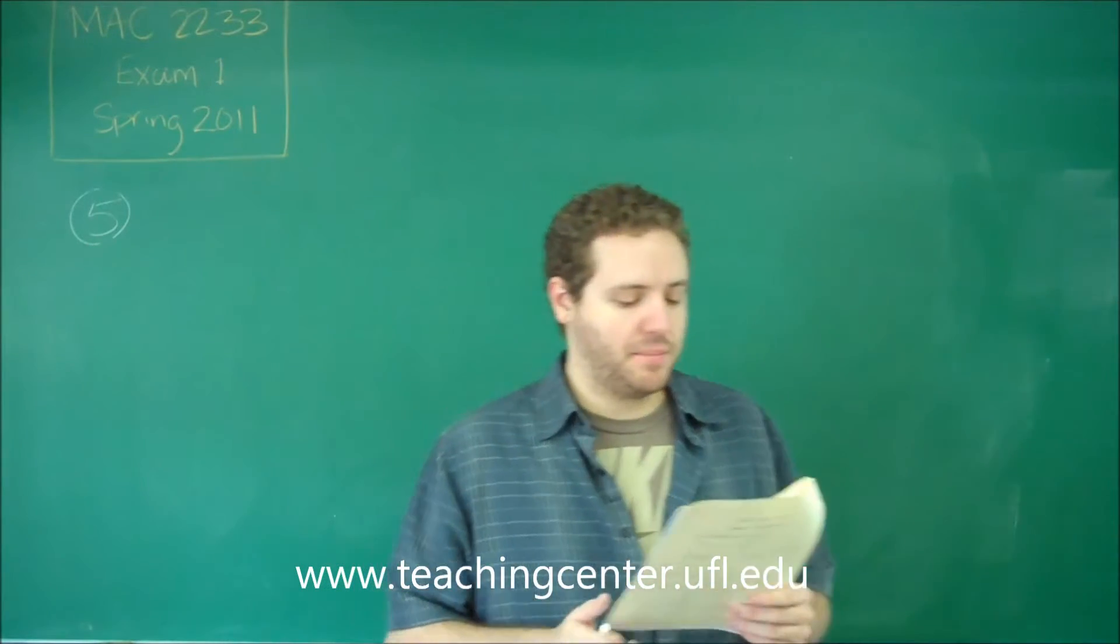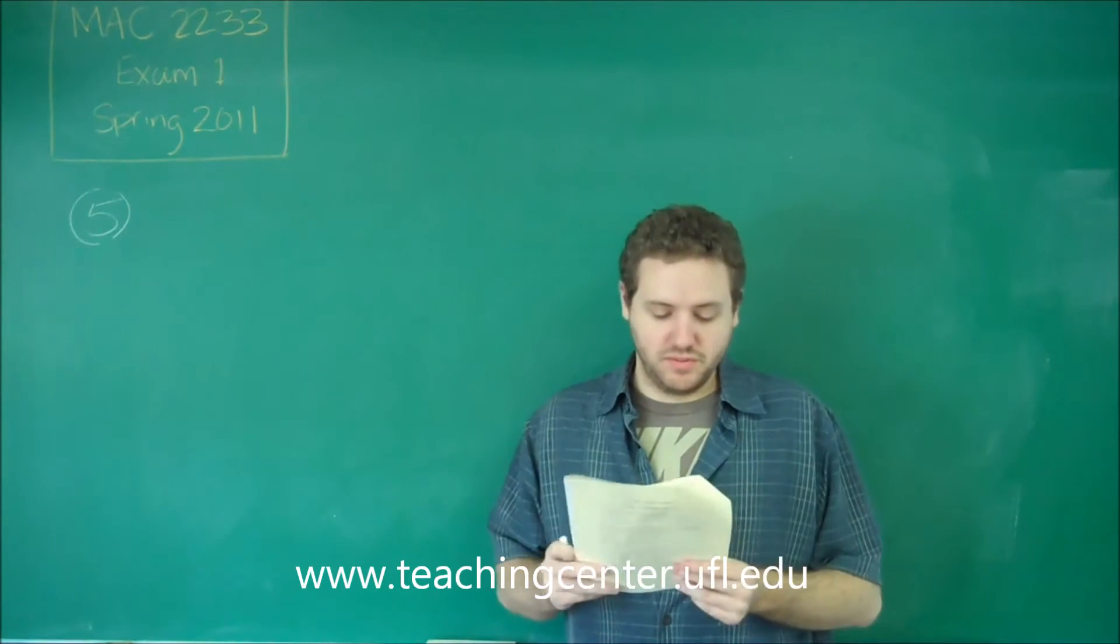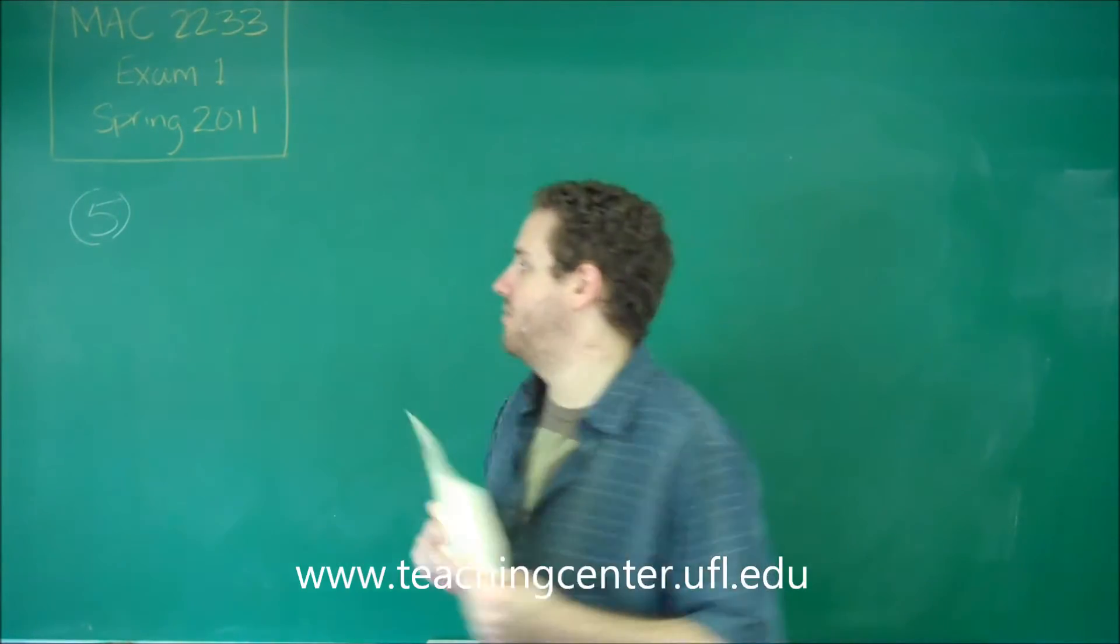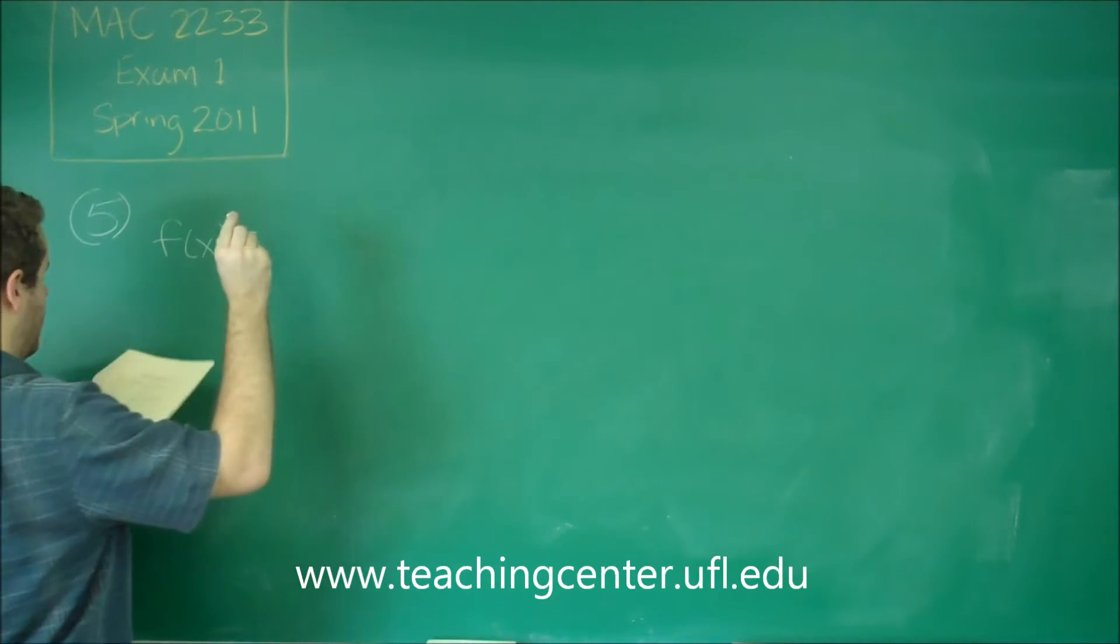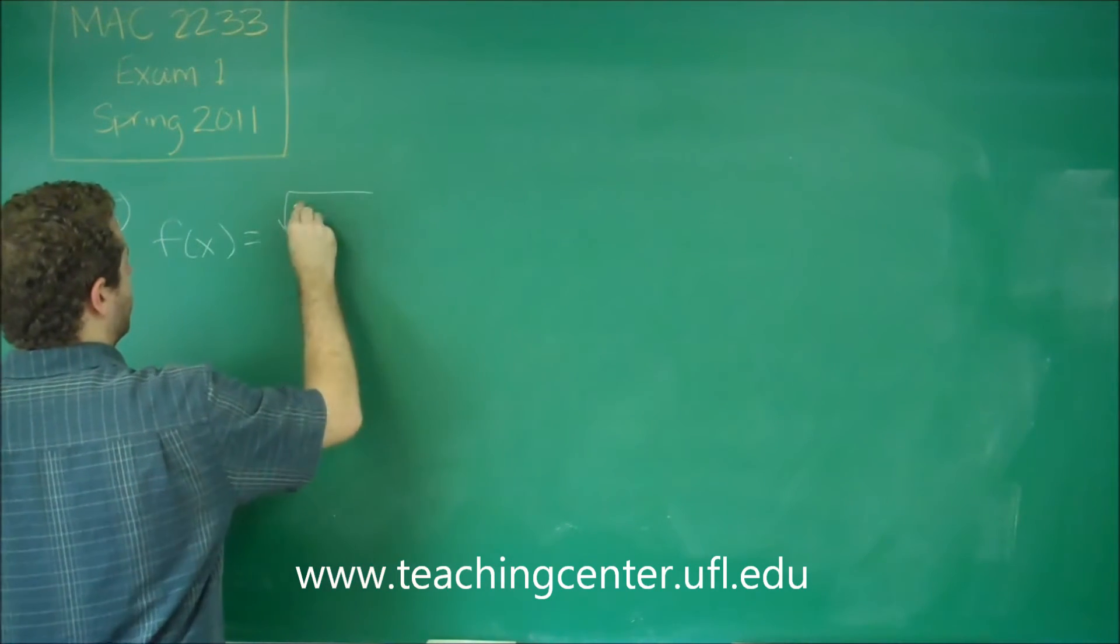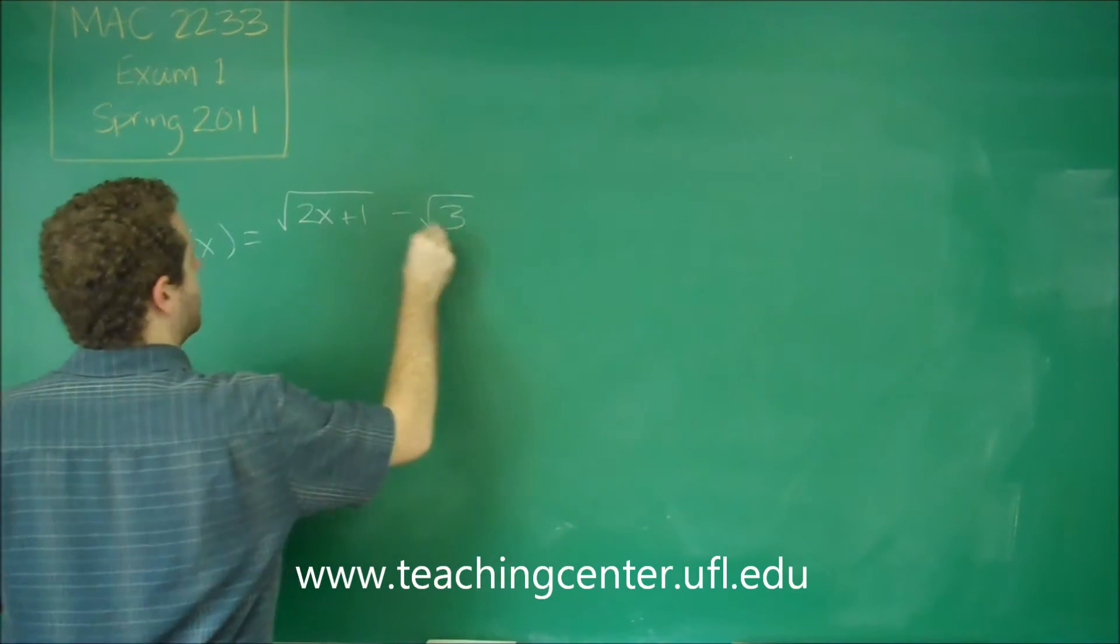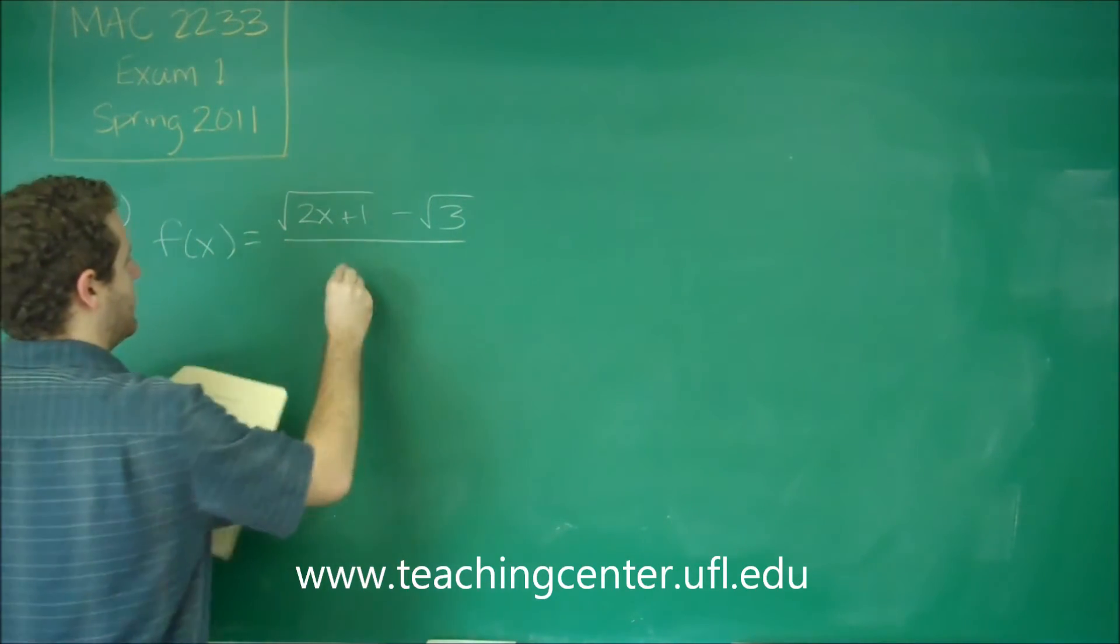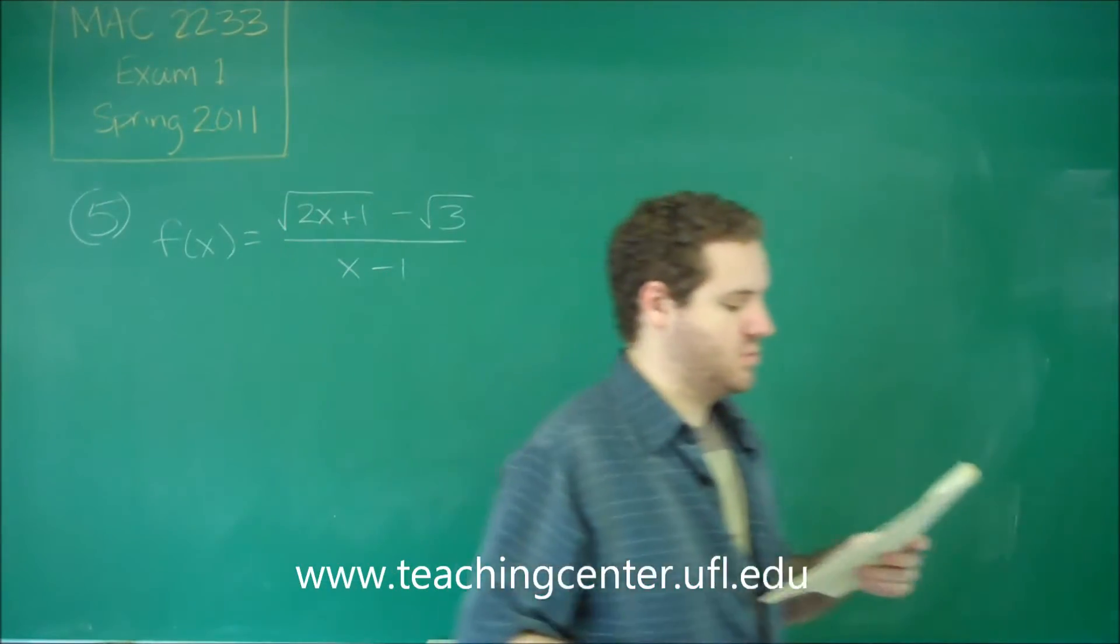For number 5 we have another limit problem. In this case we're involving some square roots here. So we have this function f of x, a rational function involving square roots. This is a pretty common form of test question. We have square root of 2x plus 1 minus square root of 3 all over x minus 1. We're trying to find the limit as x approaches 1.